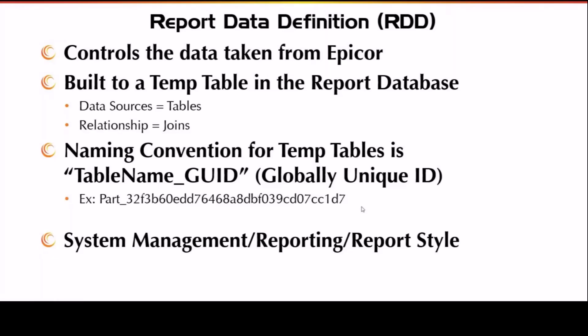When your Epicor Report is run, it's going to build a part underscore this GUID, which changes every time your report is run. This is unique for each report, and that's going to build the data from the part table with whatever part numbers you're looking for. So it doesn't build the entire part table — it just builds what's relevant to the report you're running. Epicor does it this way so you're not querying the whole database every time someone runs a report, making it a little quicker.